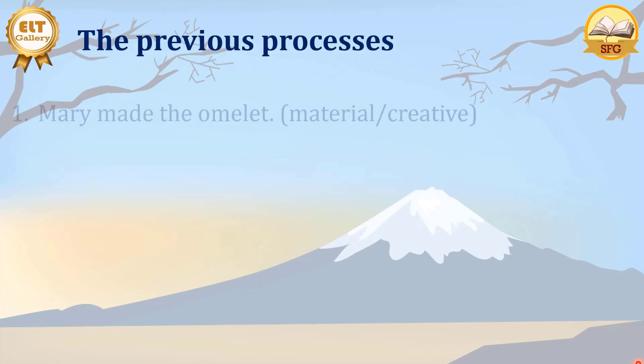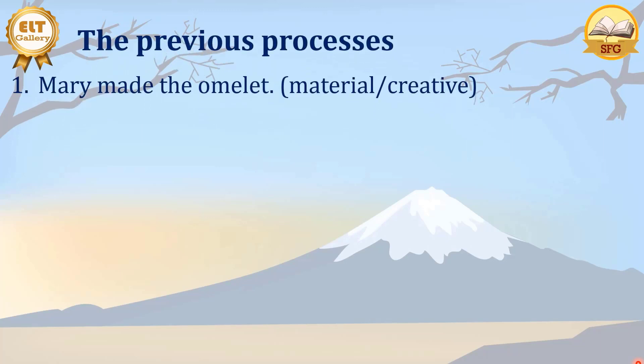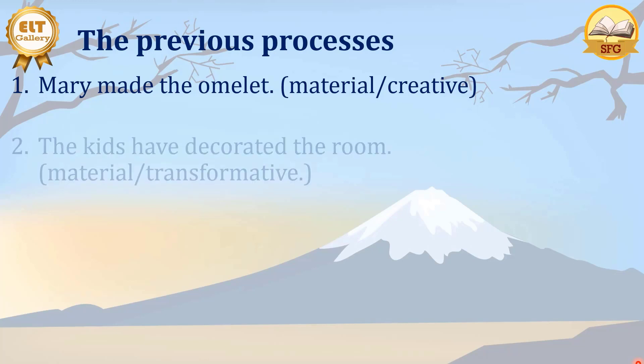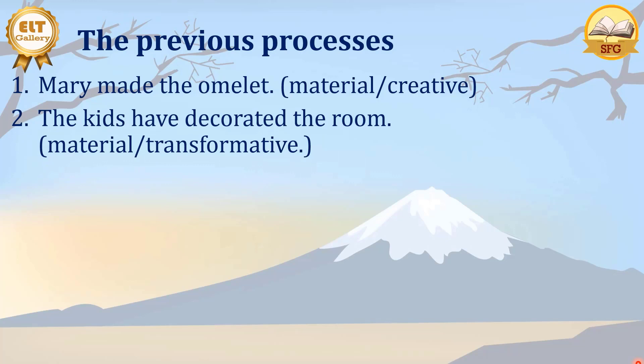We have sentences like 'Mary made the omelette.' Here we have a material process — creative material process because the omelette was produced. And then 'The kids have decorated the room.' That's a material process. We changed the appearance of the room. That's transformative.